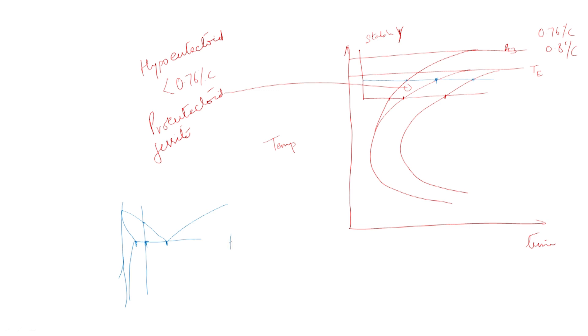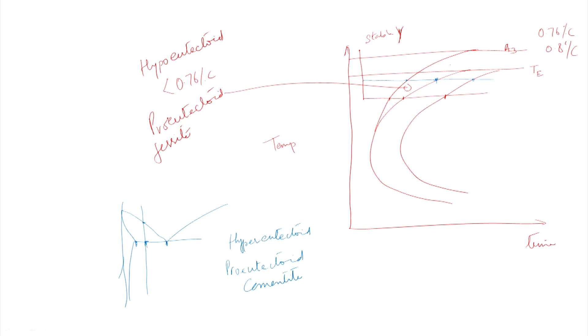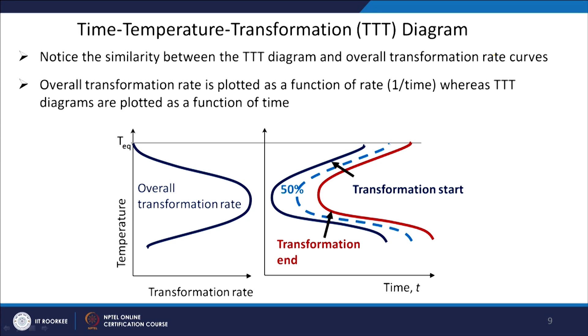If it is a hyper-eutectoid steel, instead of pro-eutectoid ferrite you will get pro-eutectoid cementite — so an additional curve for pro-eutectoid cementite appears. If you are not crossing the eutectoid temperature, you will get ferrite obviously. So we discussed the TTT diagram, the procedure to construct it, and the similarity between the overall transformation rate and TTT diagrams.